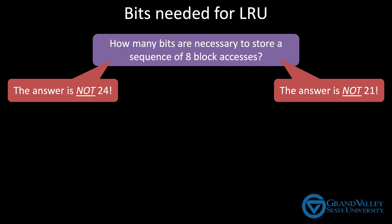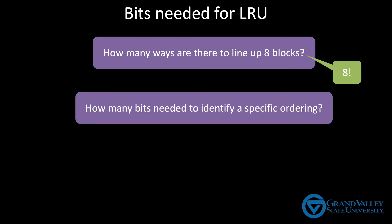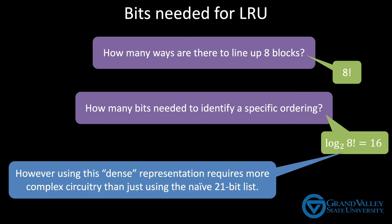Think about how many different ways there are to line up eight blocks — that's eight factorial. So if there are eight factorial possible ways to line up eight blocks, how many bits do you need to identify one of those specific orderings? That would be the log of eight factorial, which is 16. So by being clever, you can actually implement LRU using only 16 bits per line. However, using a dense representation like this probably isn't the best strategy, because to use it you have to build a considerably larger and therefore slower circuit. So there is a trade-off between how many bits you store and how fast the algorithm can be.